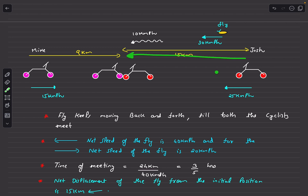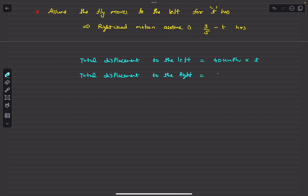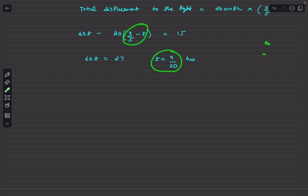To find t, we use the net displacement. Total leftward displacement minus total rightward displacement equals 15 km: 40t − 20(3/5 − t) = 15. Solving this gives t = 9/20 hours. So the fly moves leftward for 9/20 hours and rightward for 3/5 − 9/20 hours.